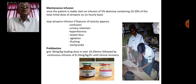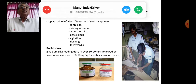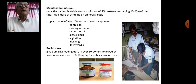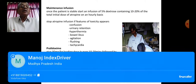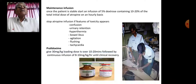Pralidoxime, if used, is given as 30 mg per kg body weight loading dose over 10 to 20 minutes, followed by continuous infusion of 8 to 10 mg per kg per hour until clinical recovery.